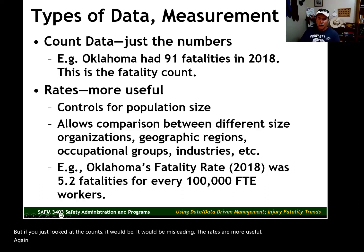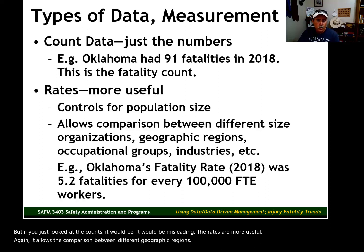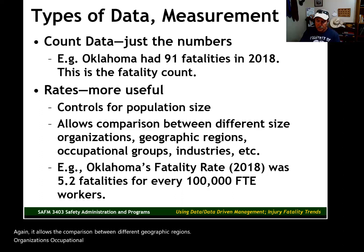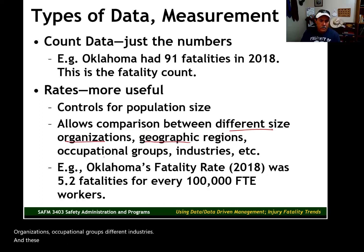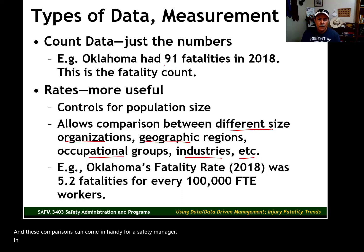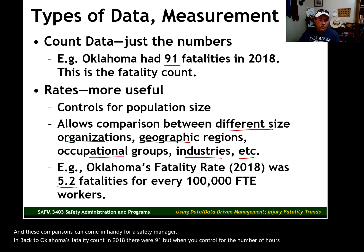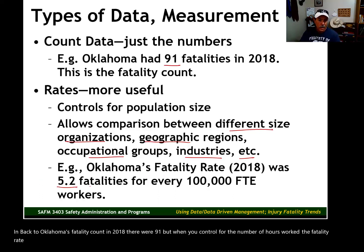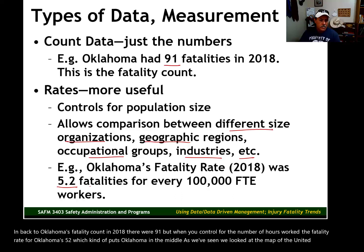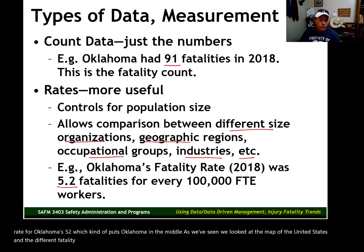Rates allow a comparison between different geographic regions, organizations, occupational groups, and different industries. These comparisons can come in handy for a safety manager. Back to Oklahoma's fatality count in 2018 — there were 91. But when you control for the number of hours worked, the fatality rate for Oklahoma is 5.2, which puts Oklahoma in the middle. We looked at the map of the United States and the different fatality counts and rates for different states.